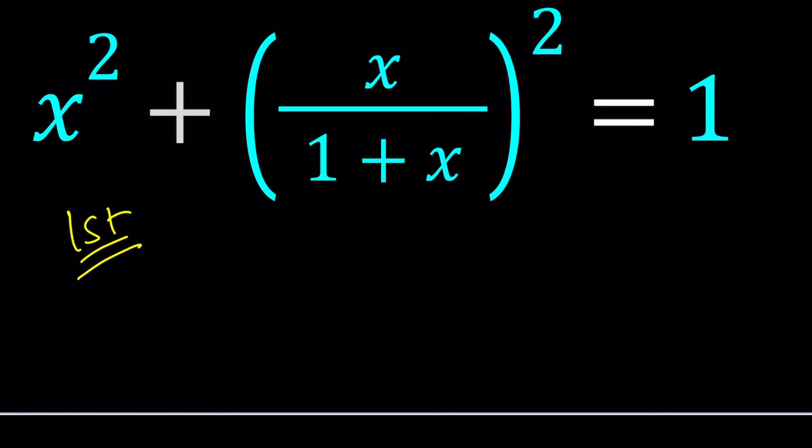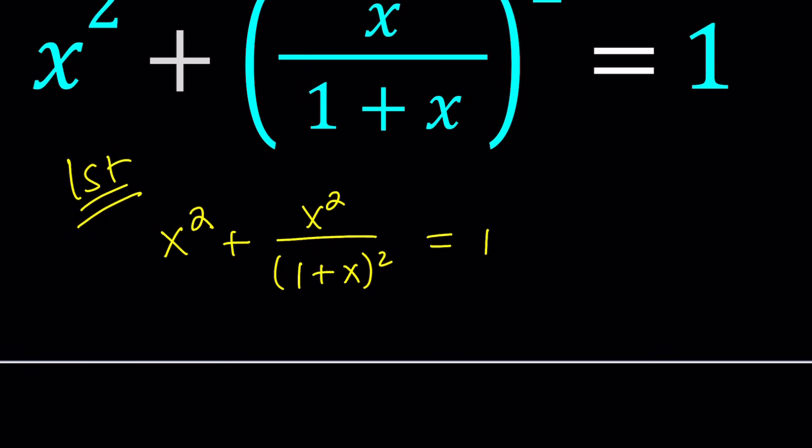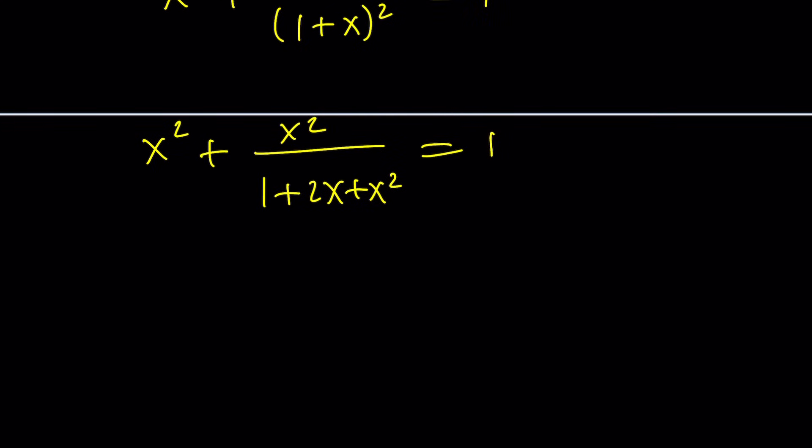For my first method, I want to use brute force, so just expand everything. Now, after squaring the fraction or the quotient, I can go ahead and make a common denominator, but let me just go ahead and expand 1 plus x squared first.